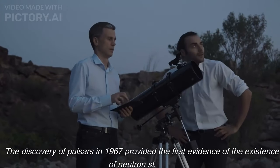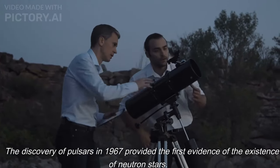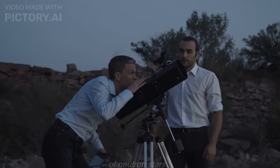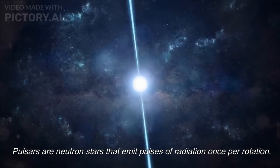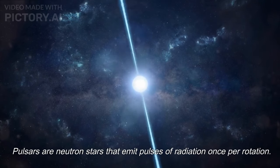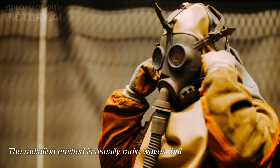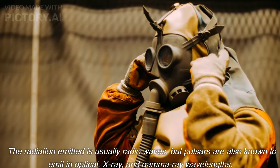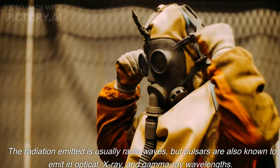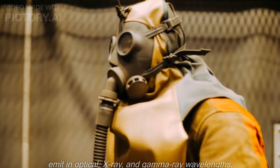The discovery of pulsars in 1967 provided the first evidence of the existence of neutron stars. Pulsars are neutron stars that emit pulses of radiation once per rotation. The radiation emitted is usually radio waves, but pulsars are also known to emit in optical, X-ray, and gamma-ray wavelengths.